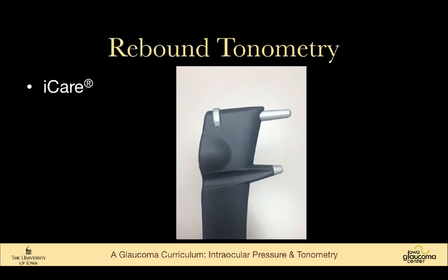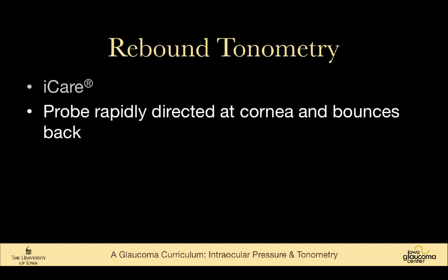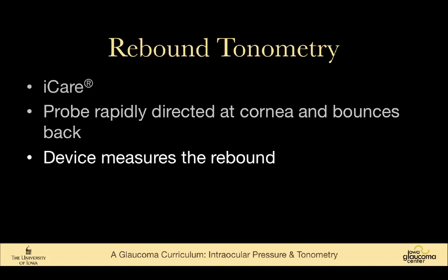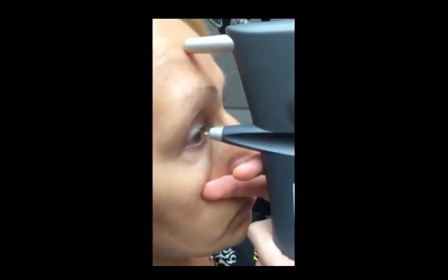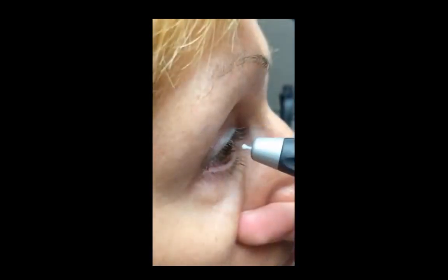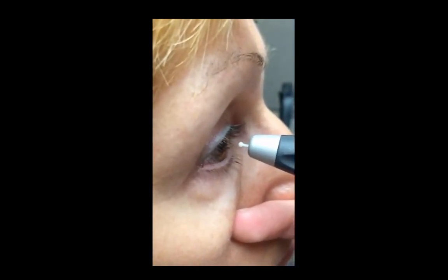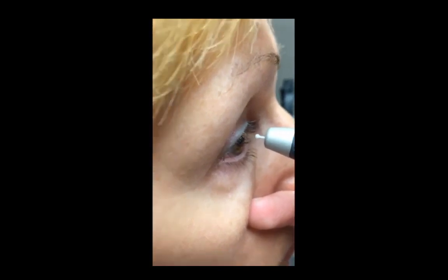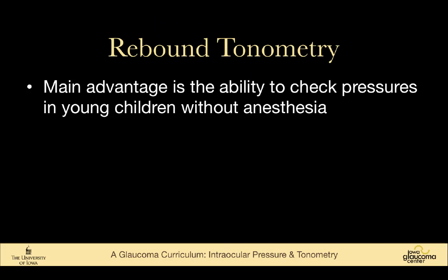Rebound tonometry, or iCare, is relatively newer. A probe is directed at the cornea and bounces back, and the device measures that rebound off the cornea. The major advantage of rebound tonometry is the ability to check pressures in young children without giving them topical anesthesia. This has been transformational in terms of reducing how often we need to take children back for exams under anesthesia, because children on whom we couldn't perform tono pen or applanation tonometry can often be assessed with rebound tonometry.